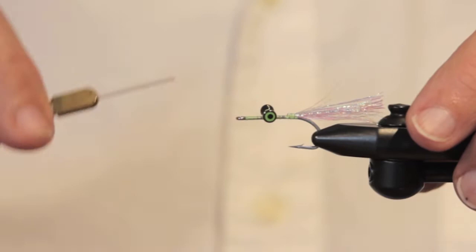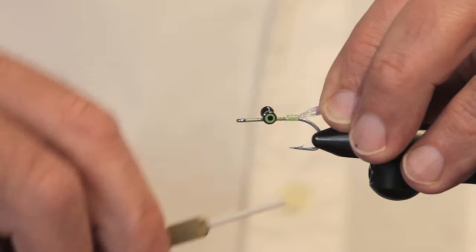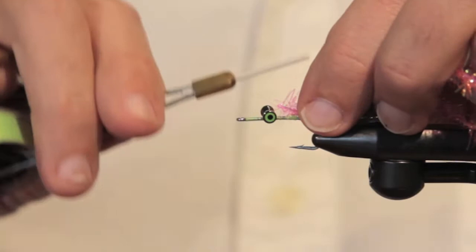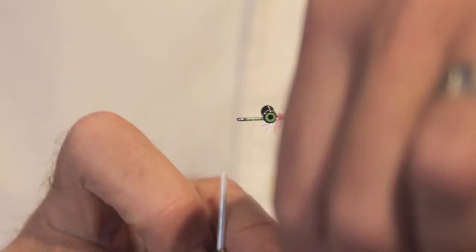These flies, when you see them available for commercial purchase in Alaska, they often sell them in sizes one and one-aught. Those are pretty big flies, and when fish are in fresh, they'll bite those pretty well.